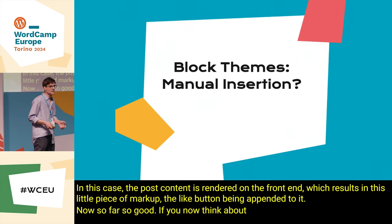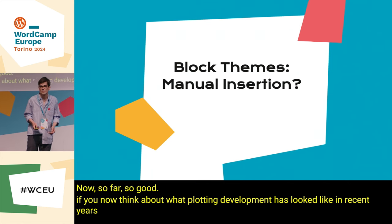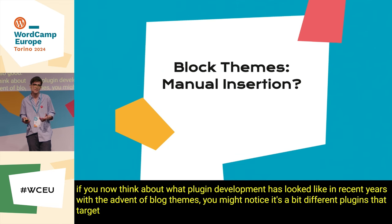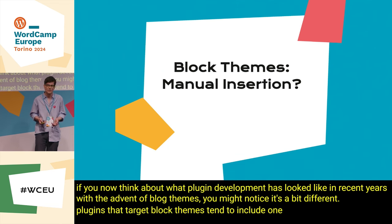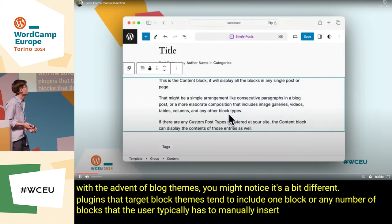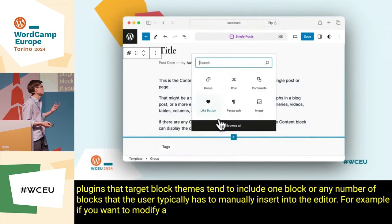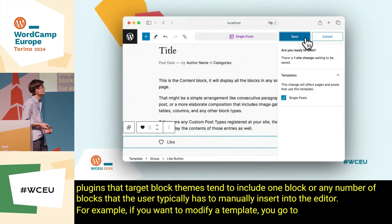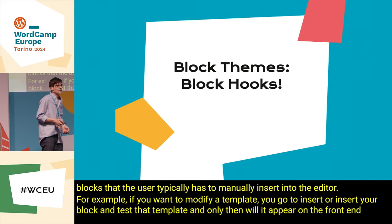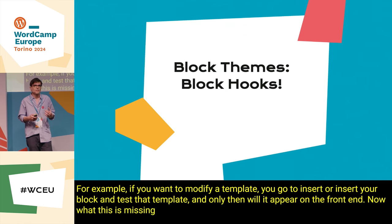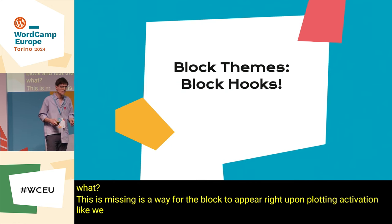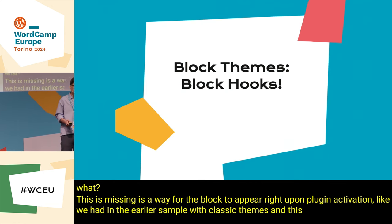If you now think about what plugin development has looked like in recent years with the advent of block themes, you might notice it's a bit different. Plugins that target block themes tend to include one block or any number of blocks that the user typically has to manually insert into the editor. For example, if you want to modify a template, you go to the inserter, insert your block, and save the template, and only then will it appear on the frontend. What this is missing is a way for the block to appear right upon plugin activation, like we had with classic themes. And this is the problem that Block Hooks solves.